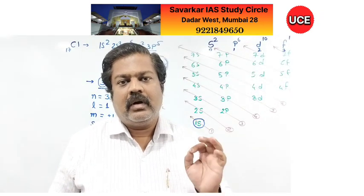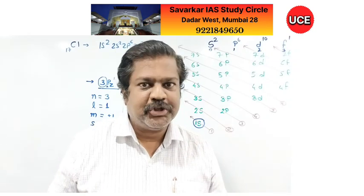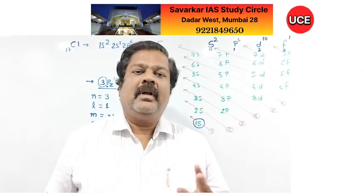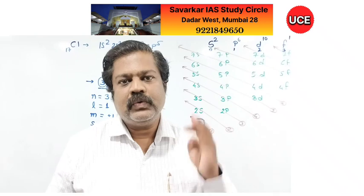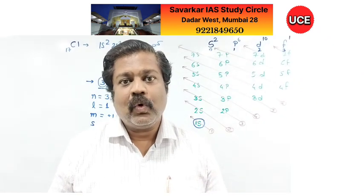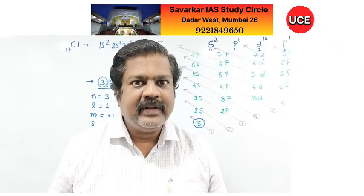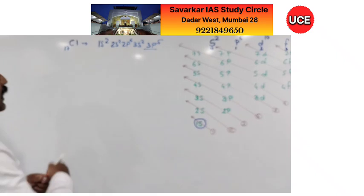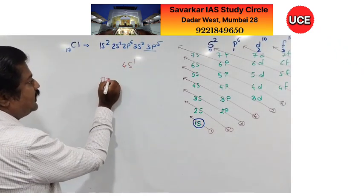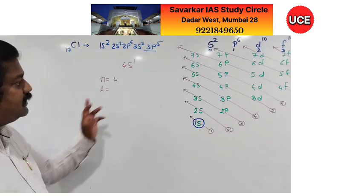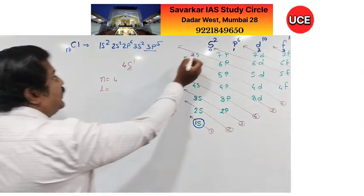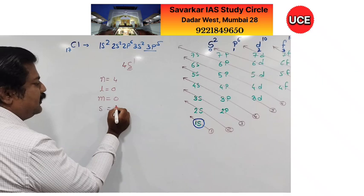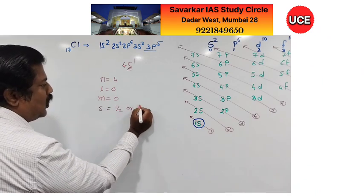Find all 4 quantum numbers of the last electron of potassium (atomic number 19). Electronic configuration: 1s², 2s², 2p⁶, 3s², 3p⁶, 4s¹. The last electron is in 4s¹. So n = 4, l = 0 (S means l = 0), m = 0 (since l = 0, no +0 or −0), and spin s = +½ or −½.